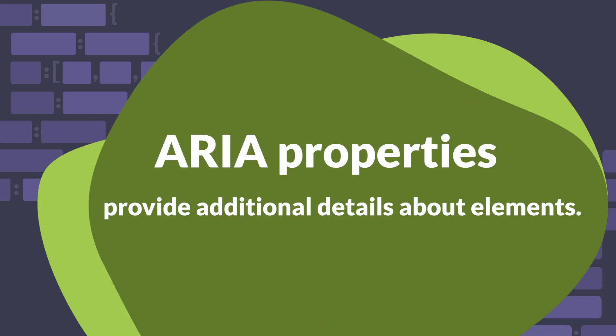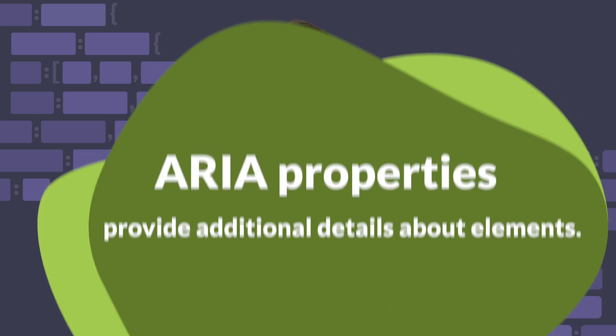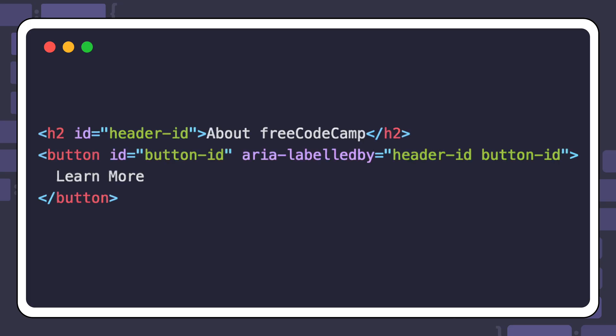ARIA properties provide additional details about elements. For example, the ARIA labeled-by property lets you connect an element to a specific label. This will make the elements understandable and navigable for users of assistive technologies.